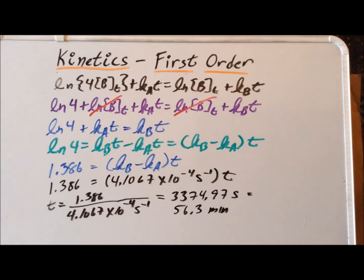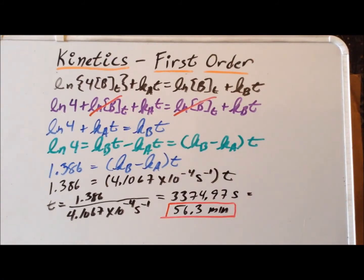So this tells us that starting with equal initial concentrations of A and B, after a little more than 56 minutes, the concentration of A will be exactly four times the concentration of B. Thank you very much for your attention. Have a good one.